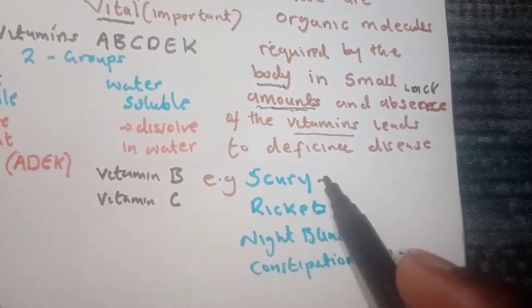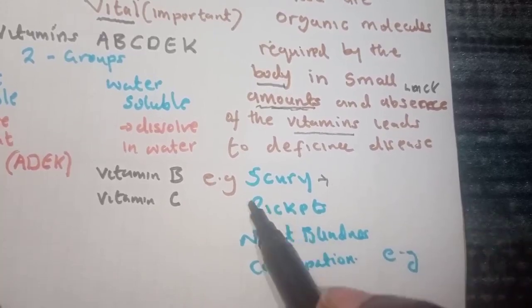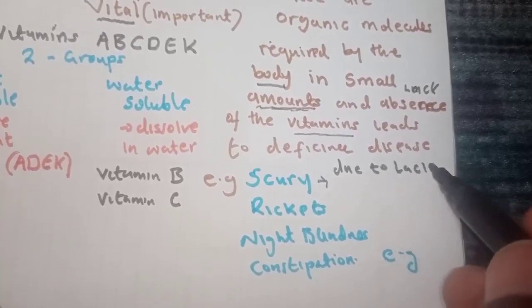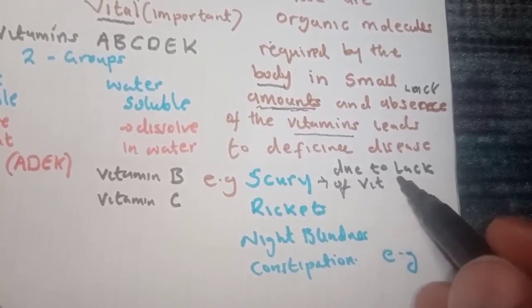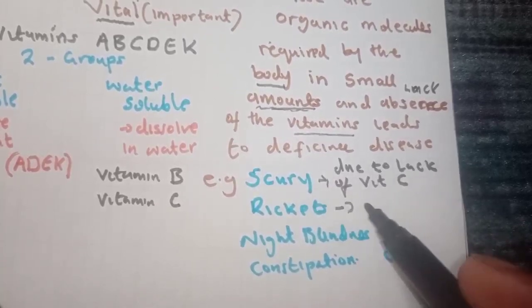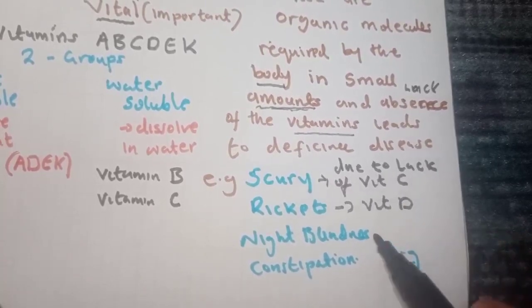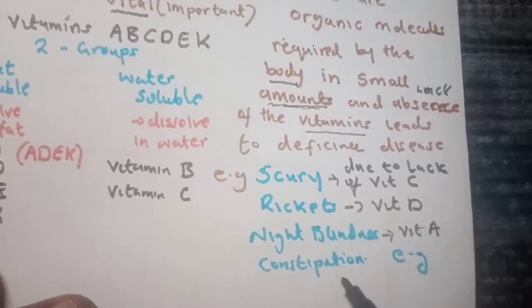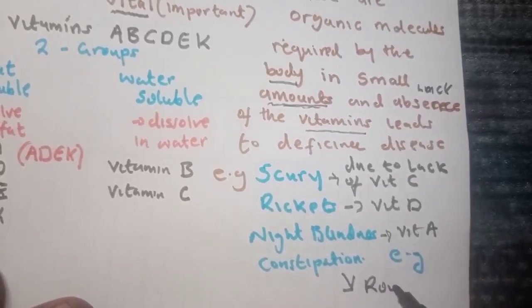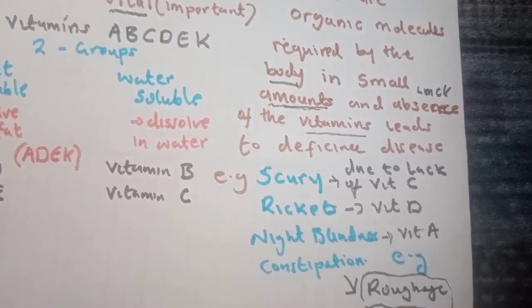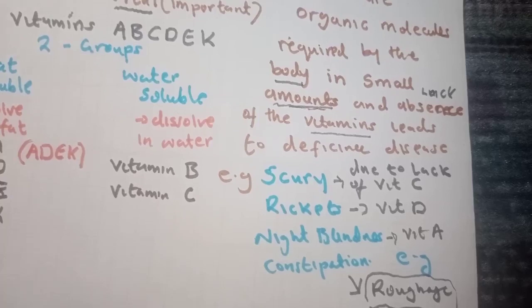Examples of deficiency diseases: scurvy occurs due to lack of vitamin C, rickets is due to lack of vitamin D, night blindness is caused by lack of vitamin A, and constipation results from lack of roughage, which is another nutrient we'll talk about.